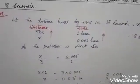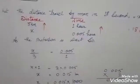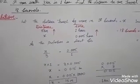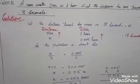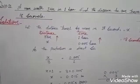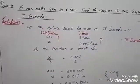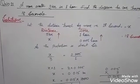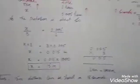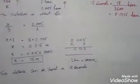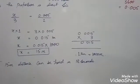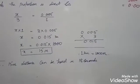Since this is a direct proportion: x divided by 3 equals 0.005 divided by 1. By cross multiplication: x times 1 equals 3 times 0.005. Multiplying 3 by 0.005 gives 0.015, so x equals 0.015.